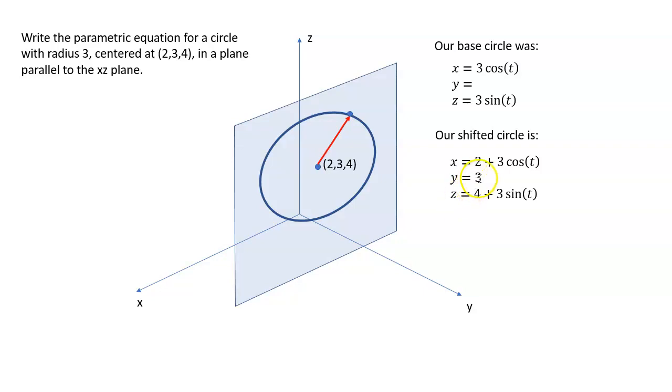Meanwhile, y, remember, is constant. y is always 3 in this case. So we end up with y is always 3, x is 2 plus 3 cosine t, z is 4 plus 3 sine t.